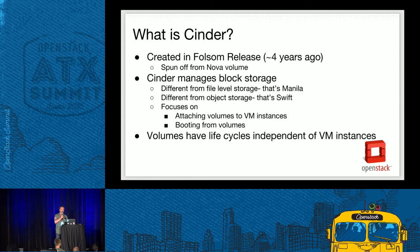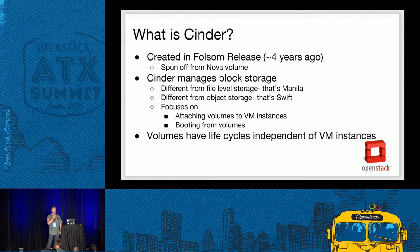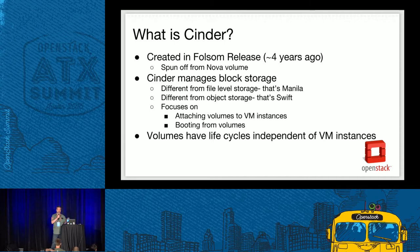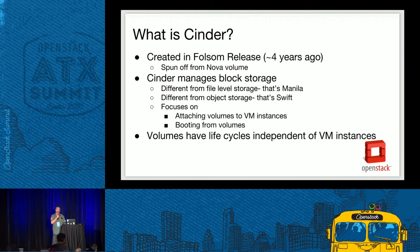What is Cinder? Cinder was created in the Folsom release about four years ago. It used to be part of Nova Volume. The team decided to break it off into a separate project. Its primary use is managing block storage — provisioning volumes and attaching volumes to VMs. It is not file-level storage and not object storage — that's Manila and Swift. Cinder focuses on attaching volumes to VMs but also to Ironic instances. Volumes have lifecycles independent of VM instances, so you can attach, do work, detach, and attach elsewhere.